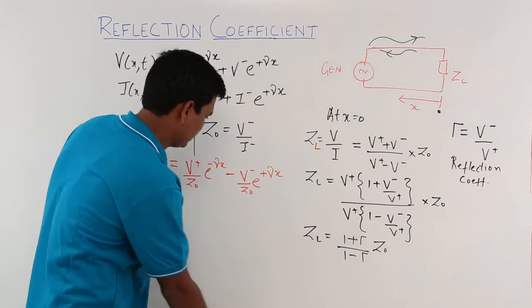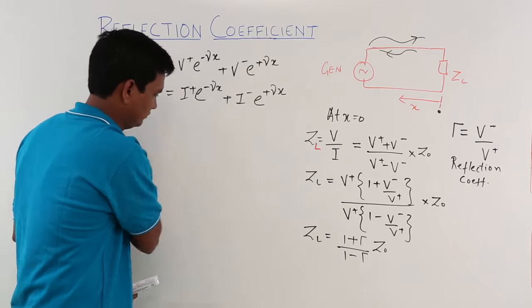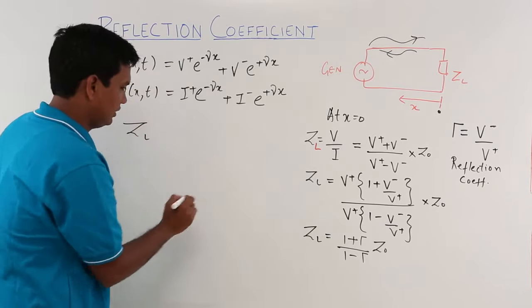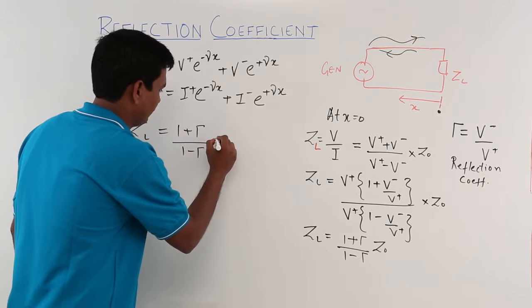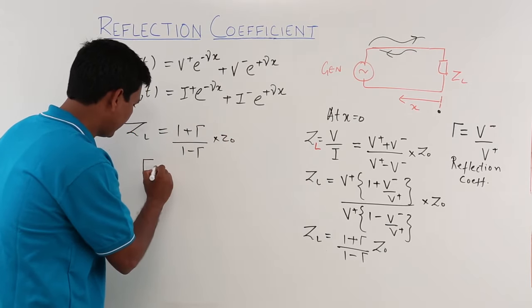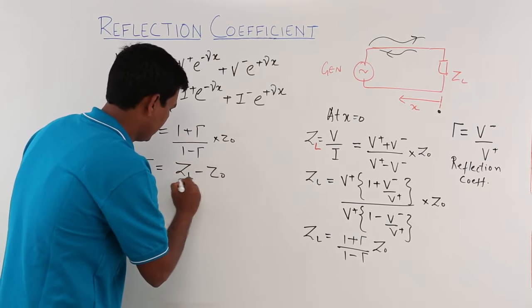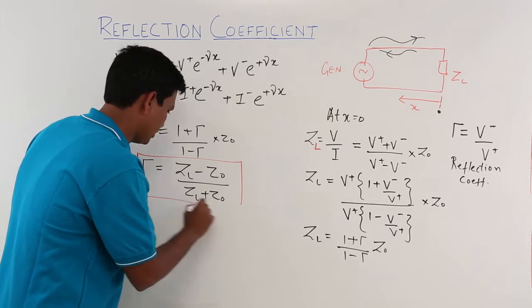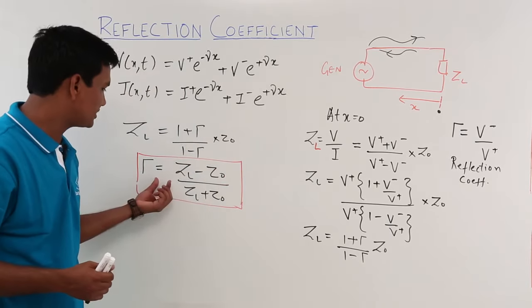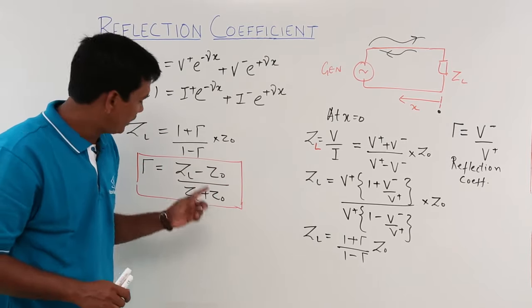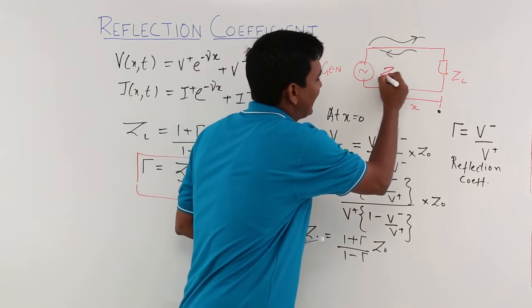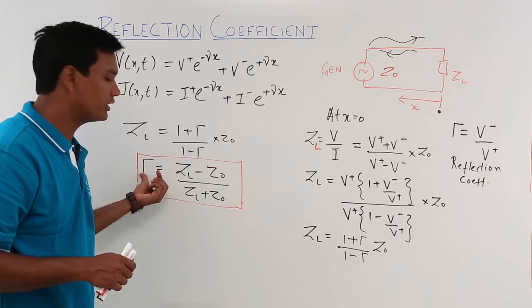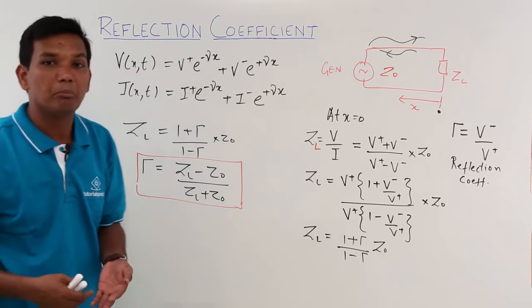We can simplify this equation. Rearranging ZL = Z0 × (1 + τ) / (1 - τ), we get τ = (ZL - Z0) / (ZL + Z0). This is the reflection coefficient in terms of impedance, where ZL is the load impedance and Z0 is the characteristic impedance.